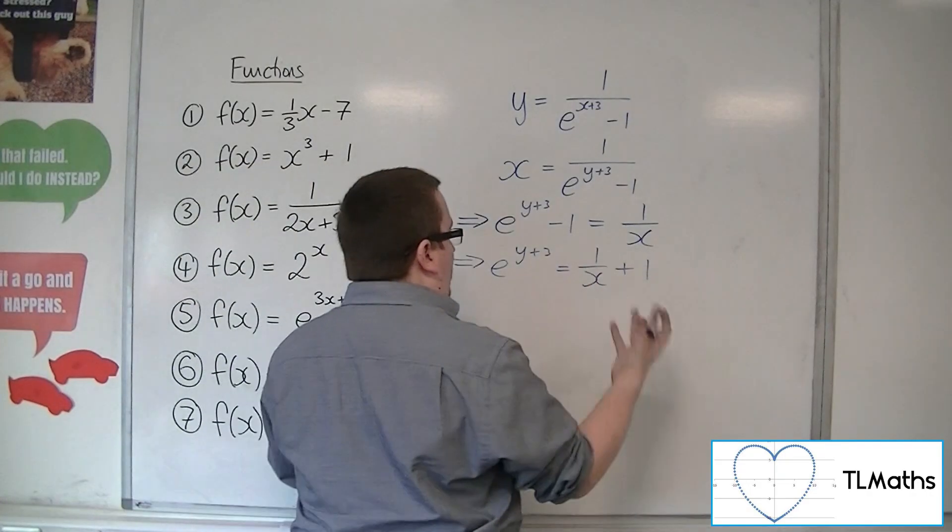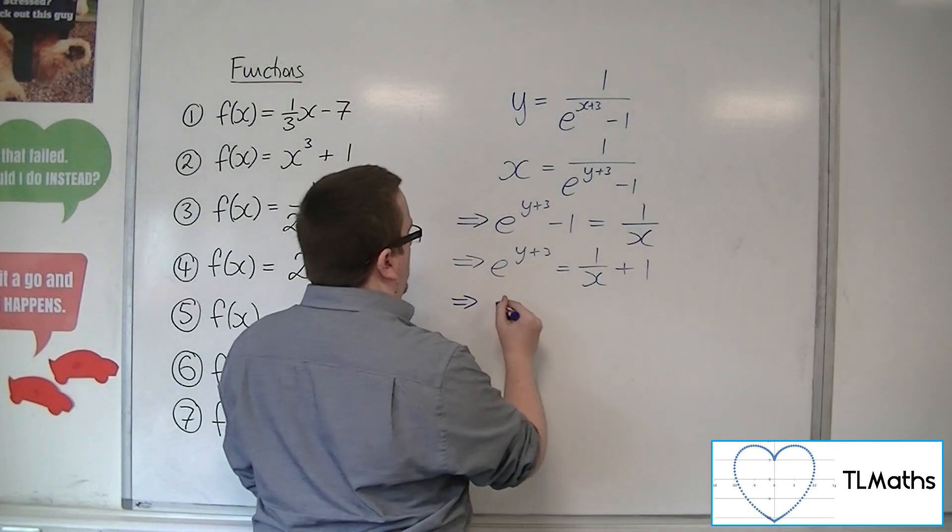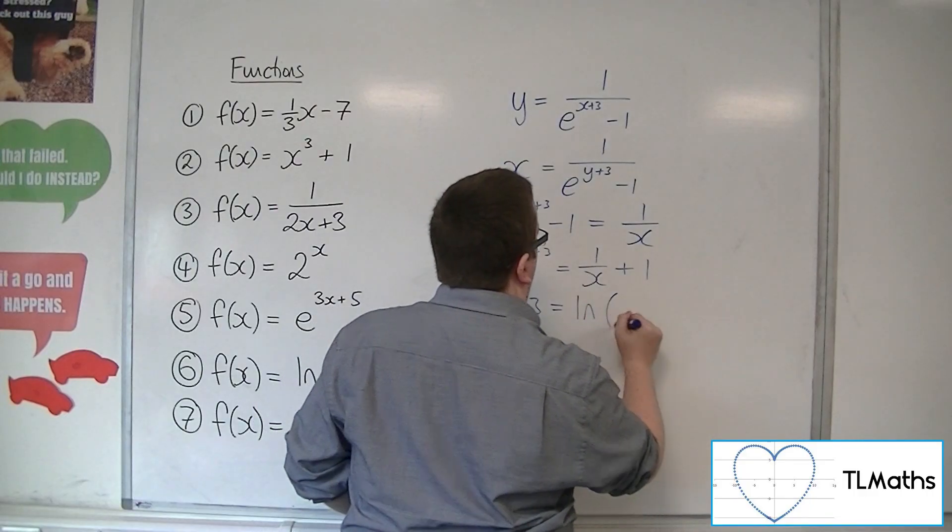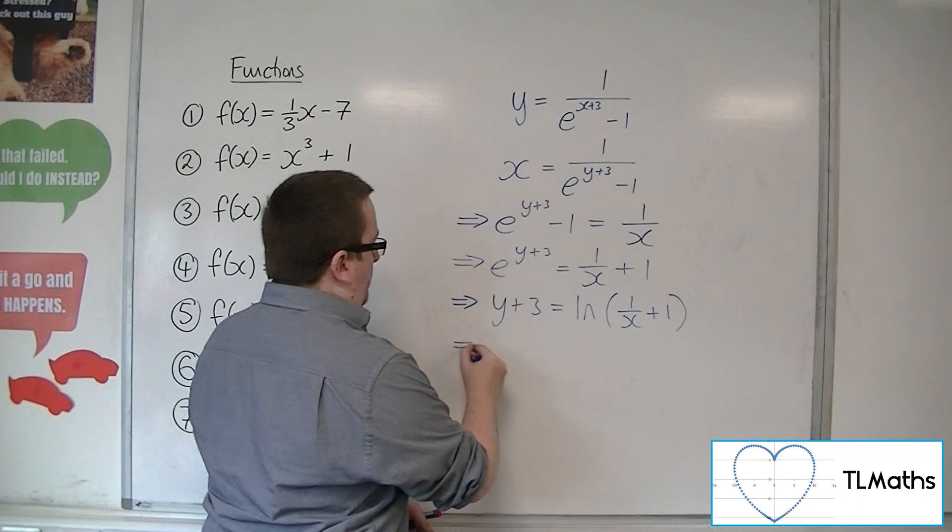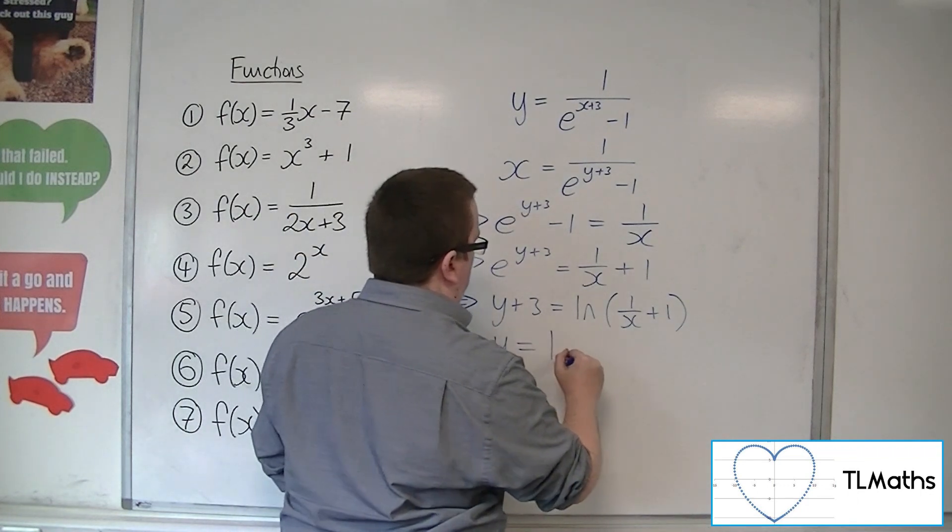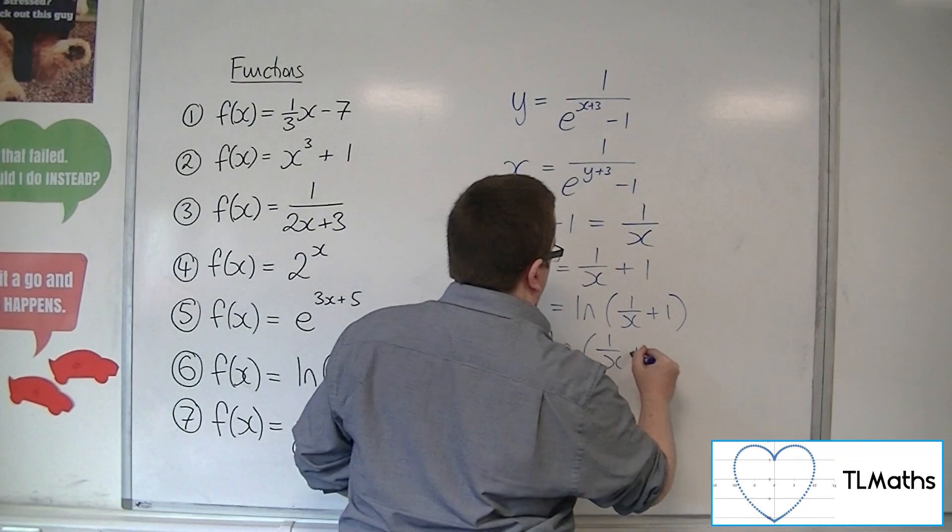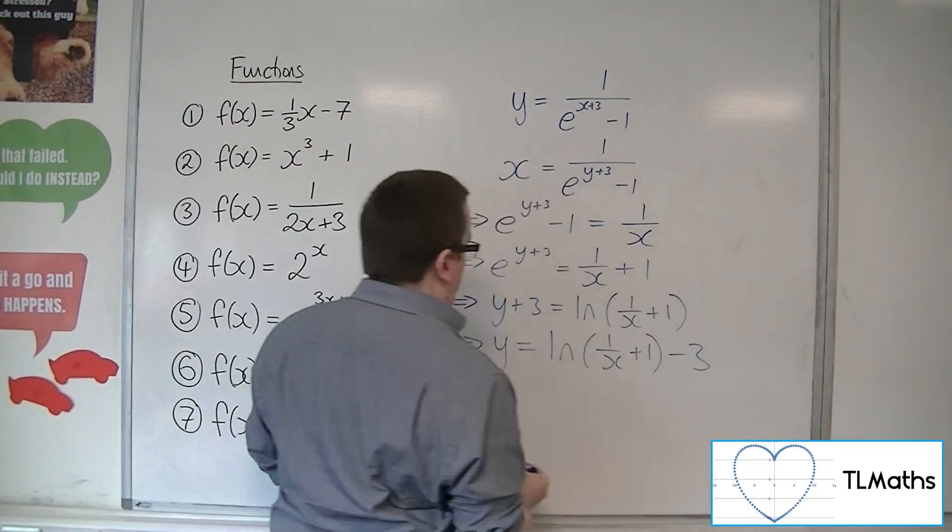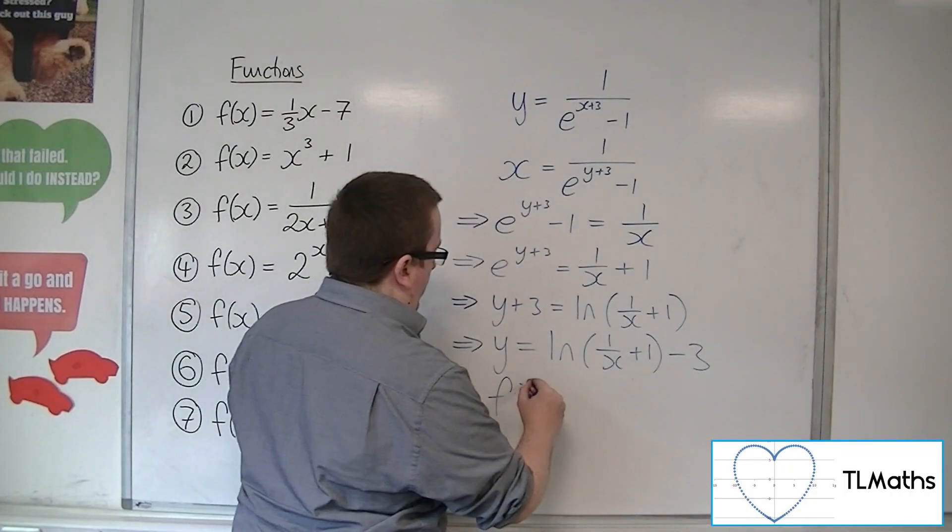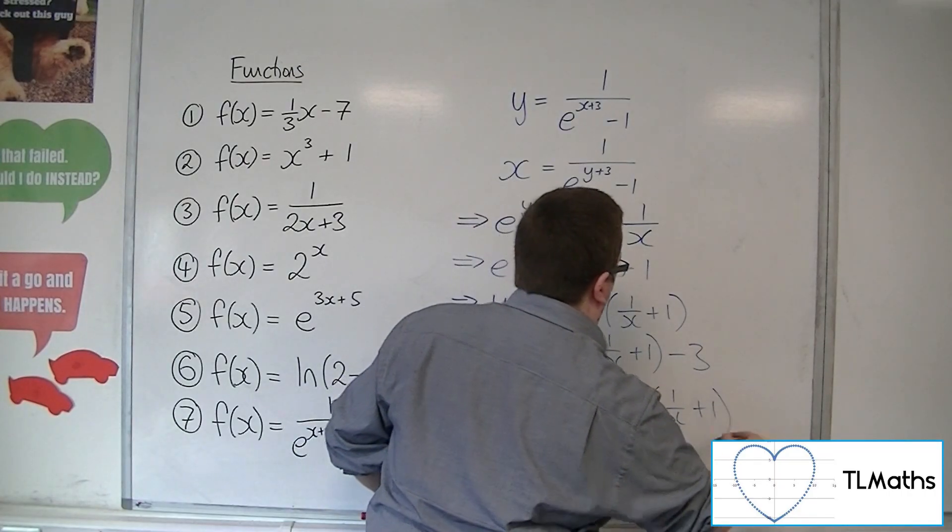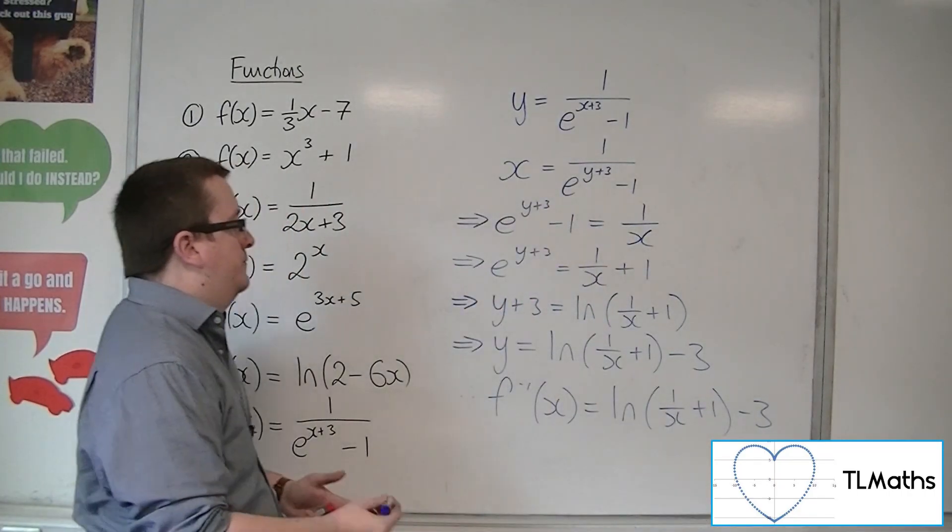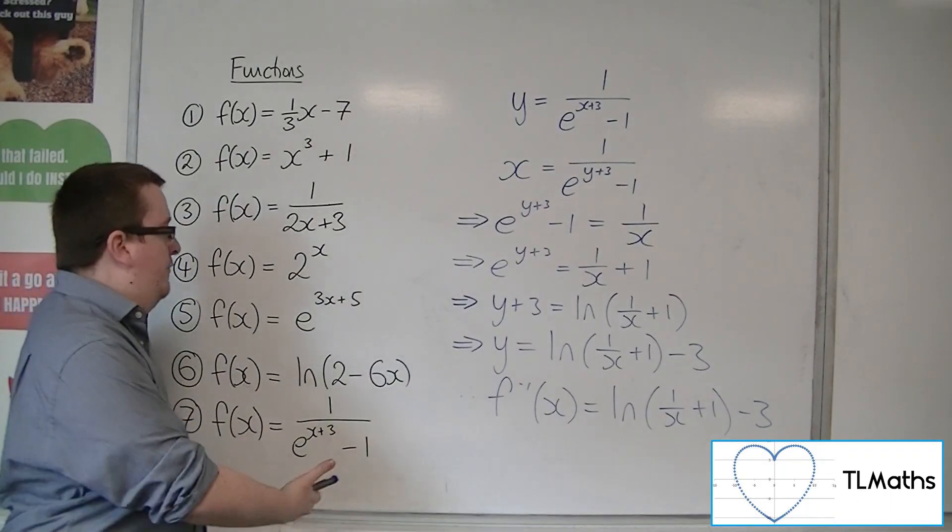So y + 3 = ln(1/x + 1), and then subtract the 3 from both sides. So the inverse function of x is ln(1/x + 1) - 3. And that's how you can get it for number 7.